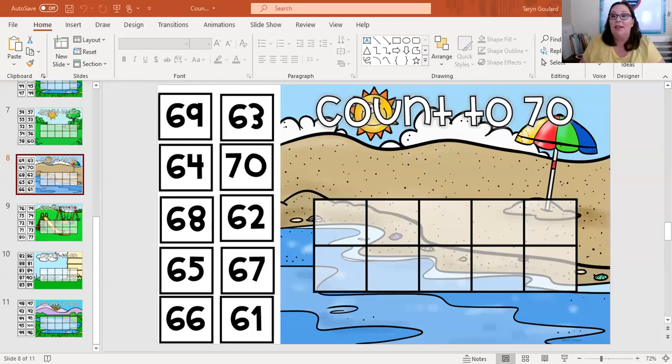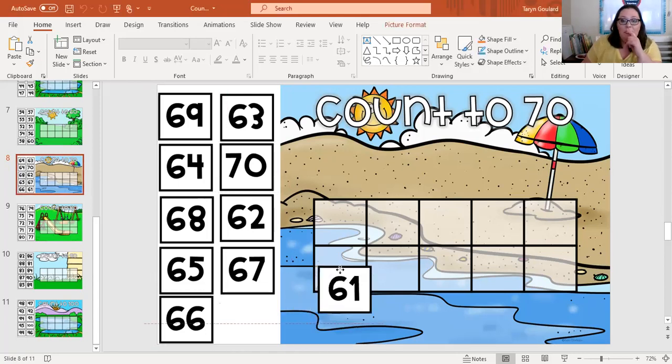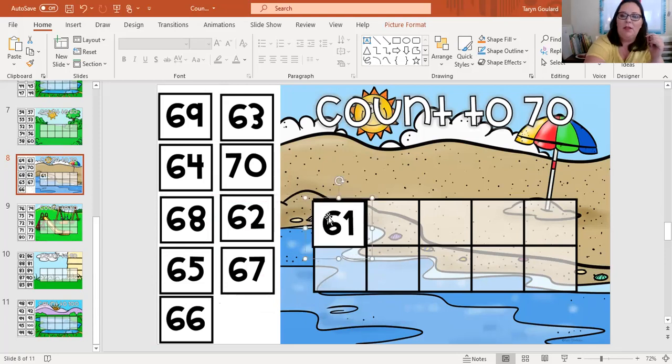All right, so let's take a look. I'm going to try and scooch. I'm going to put myself over there so that you can see our count to 70. So when we're starting that set of 10 counting to 70, we're going to start always with the ones. So we've got six groups of 10 and one one. Oh, my mouse is being weird today. Is it being wonky? It is being wonky.